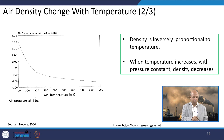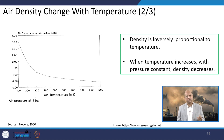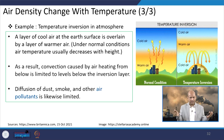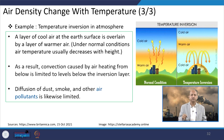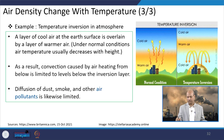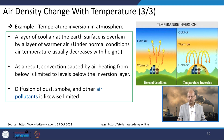Temperature and density are inversely proportional: when temperature is more, density is less, so lighter air goes up and denser air comes down. With temperature, air density changes. Under normal conditions, a layer of cool air at the earth's surface is overlain by warmer air above, and air temperature usually decreases with height. But in certain cases, warm air can be in the upper regions and cold air at the lower regions. As a result, convection caused by heating from below is limited to levels below the inversion layer.